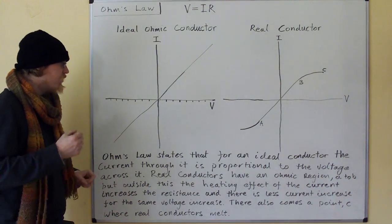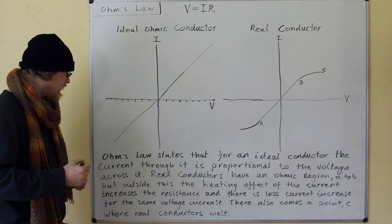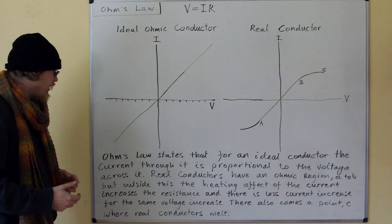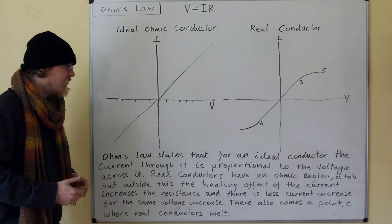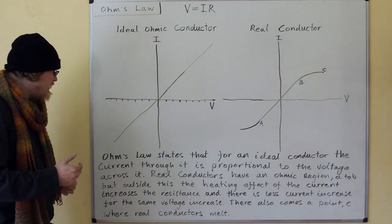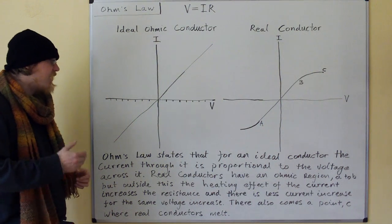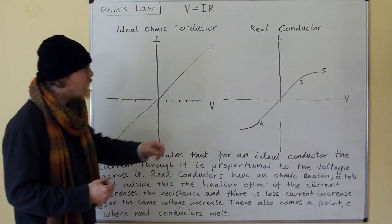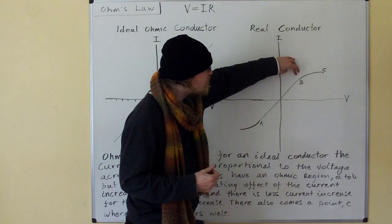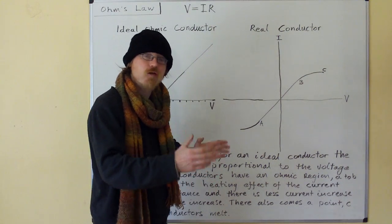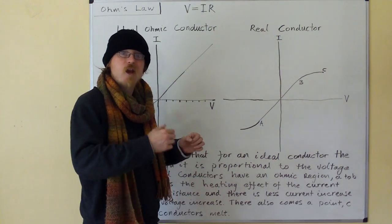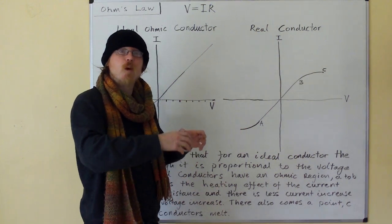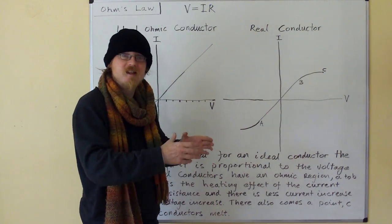Ohm's law states that for an ideal conductor, the current through it is proportional to the voltage across it. Real conductors have an ohmic region, A to B, but outside this, the heating effect of the current increases the resistance. So what's happening outside B: the voltage across the conductor is pulling a current through the conductor which is large enough to appreciably heat the conductor up.